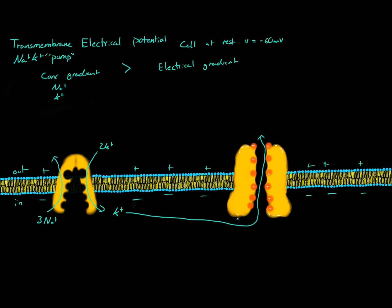There is a way to actually describe this, and that is with Gibbs free energy. At its most basic concept, you can think of it as how something is going to happen. For our case, if Gibbs free energy is positive, that means the potassium is going to leave the cell. If delta G is negative, that means potassium is going to come back into the cell.